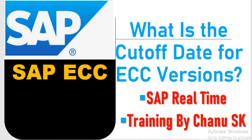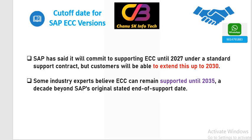So, what is the cut-off date for ECC versions? ECC version is the old version. SAP S4 HANA is the latest version. In the ECC version, students have joined and S4 HANA. But this version is the best version. ECC version is the first version, and after that S4 HANA is the newer version of S4 HANA.